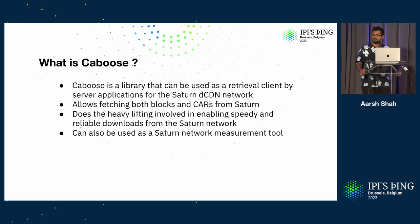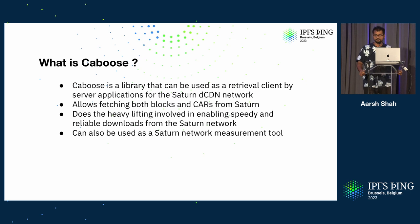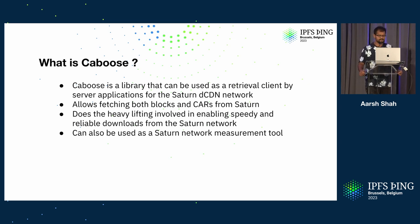Alex Kinsler here today already talked about what Saturn is. It's a decentralized CDN with about 2,000 nodes. There is some work that goes into retrieving content from that network, and Caboose does the heavy lifting for you to enable speedy and reliable downloads from Saturn. It allows fetching both blocks and cars — it supports both the graph-as-a-car API and the block fetch API from Saturn. And it can also be used as a pretty cool Saturn network measurement tool.